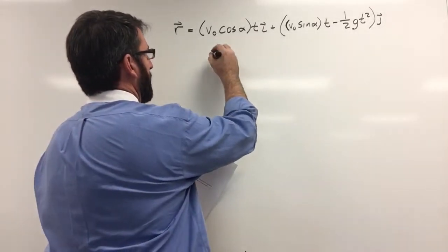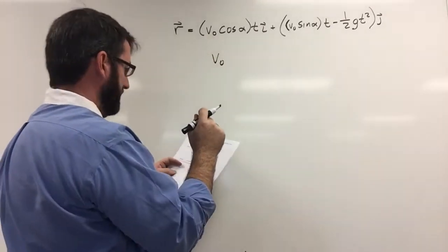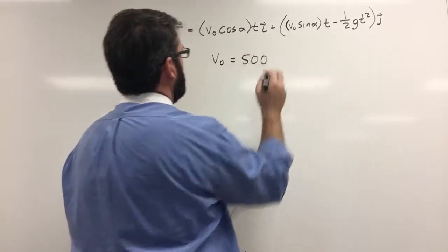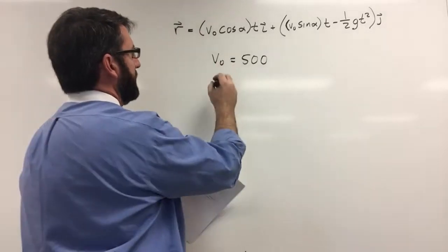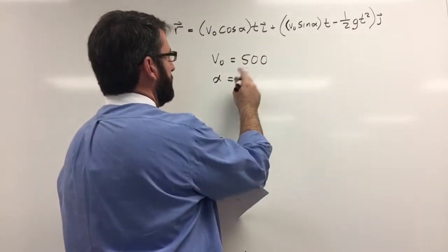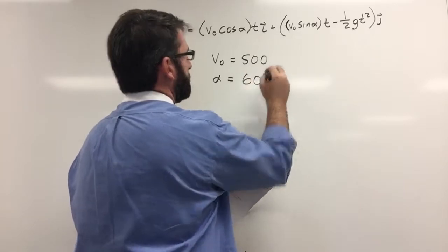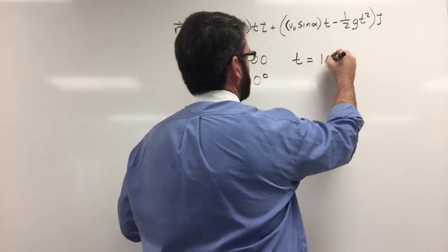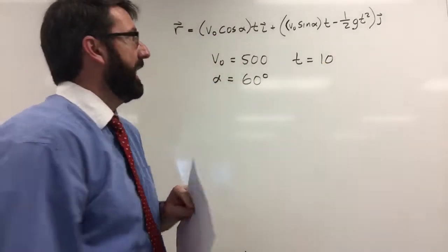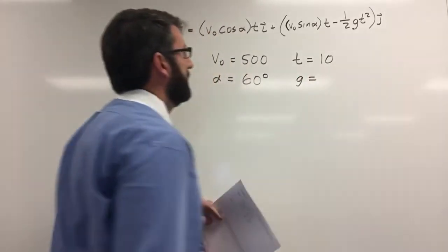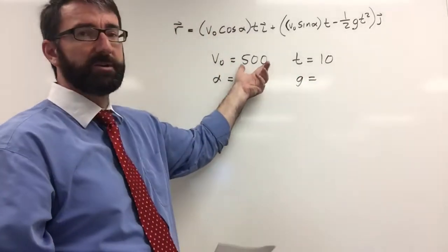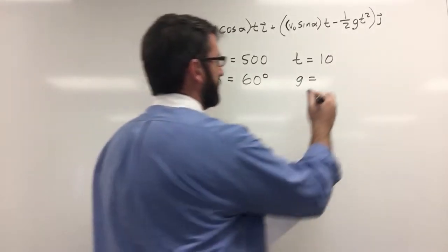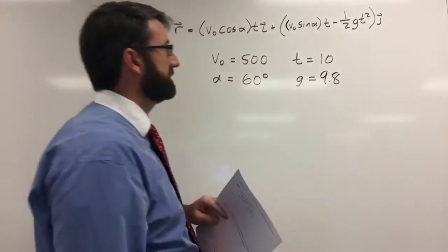So our speed, V0, our initial speed is going to be 500 meters per second. And the angle, the launch angle alpha, is going to be 60 degrees. And then our time, we're evaluating this at 10 seconds. And then the acceleration of gravity, this was in meters per second, so we need our acceleration of gravity to be in meters per second squared. So that's going to be 9.8 meters per second squared.